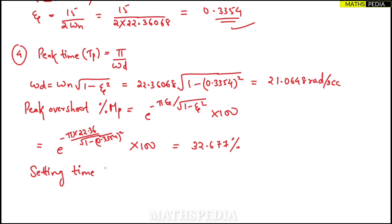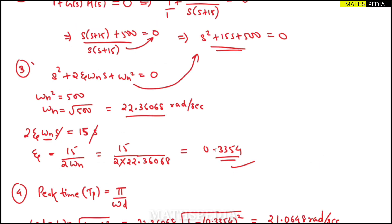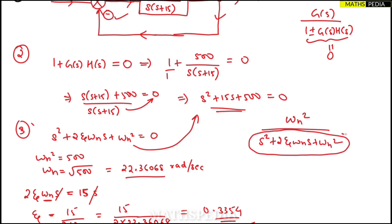Finally, settling time ts equals 4 divided by (zeta·omega_n). Substituting zeta equal to 0.3354 and omega_n equal to 22.36, we get ts equal to 0.5333 seconds. All values are found. The key approach is to compare the characteristic equation with the standard second order form s² + 2·zeta·omega_n·s + omega_n² = 0 — the denominator of the standard closed loop transfer function.